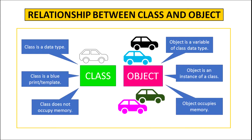Class is a data type; object is a variable of class data type. Class is the template or blueprint, and object is an instance of a class. Class does not occupy any memory, however object occupies memory.